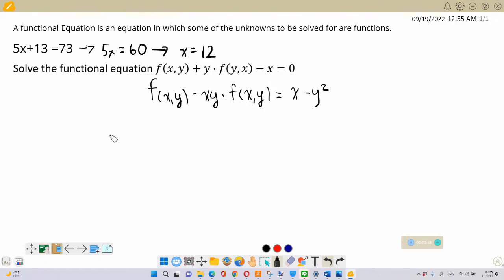From here what I can do is factor out f(x,y) and this will give me f(x,y) times 1 minus xy is equal to x minus y squared. And from here it's fairly easy to see that f(x,y) is equal to x minus y squared over 1 minus xy.